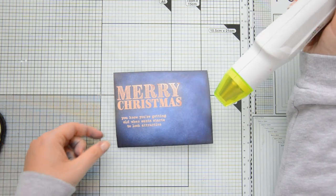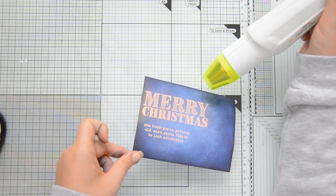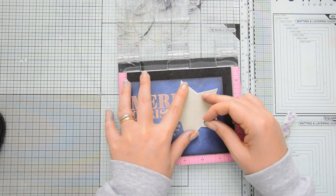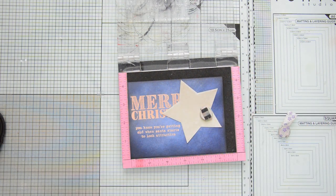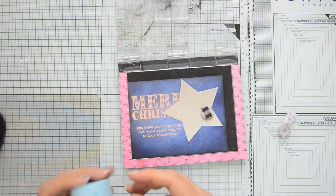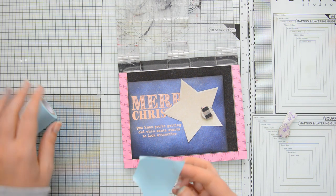The idea for this card is that I will have the pearlescent vellum star overlapping the sentiment and because of that I'm going to have to emboss the rest of the sentiment on the star. I removed the smaller sentiment because I will not need that.